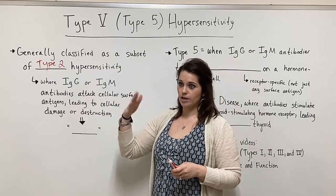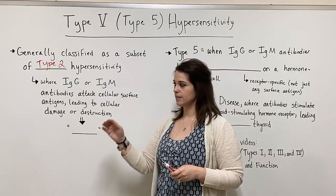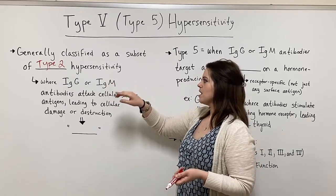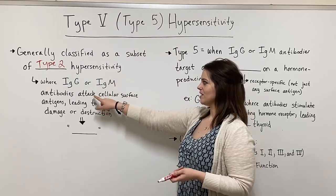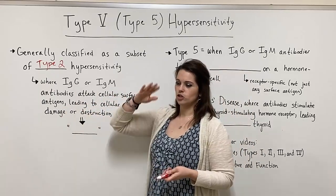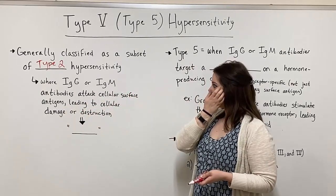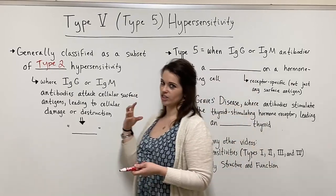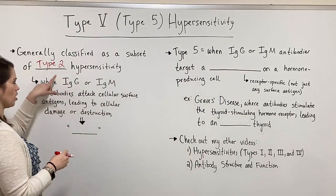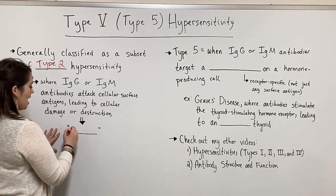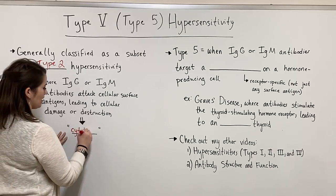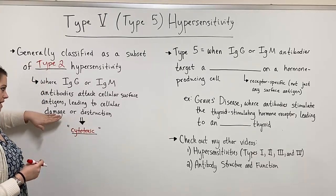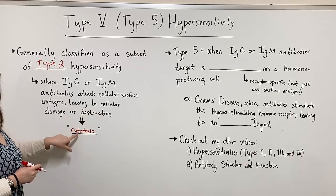Type 2 is where you have antibodies — another name for antibodies is immunoglobulins — so you have IgG, that's immunoglobulin G, or IgM, that's immunoglobulin M. These antibodies attack cellular surface antigens, just some antigenic component on the surface of a cell. This leads to some kind of cellular damage or outright cellular destruction. This is known for its cytotoxic or cytotoxicity effects, where it is toxic — meaning damage or destruction — to the cell. Remember, the prefix cyto means cell.